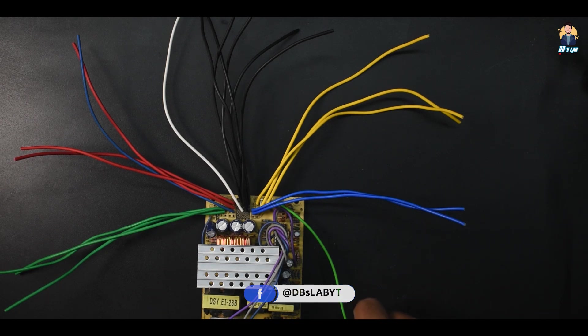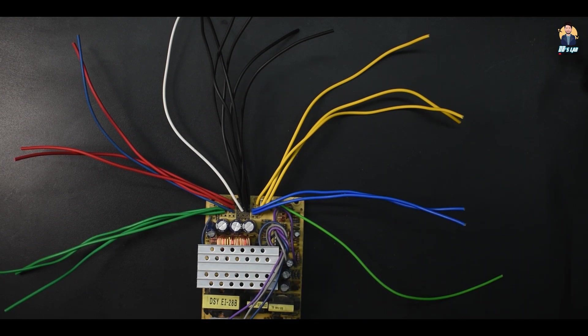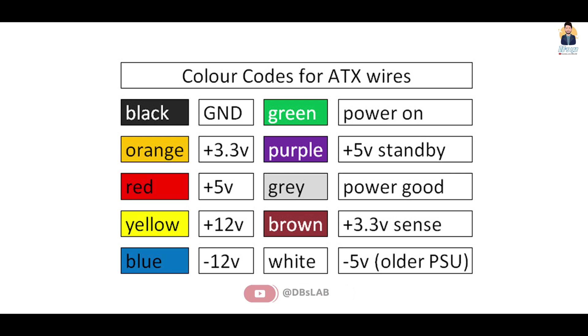Step 4: Connections. Although there are too many wires everywhere and it might seem complicated to look at, but it's actually very simple. Here is a wire color code to help you out.